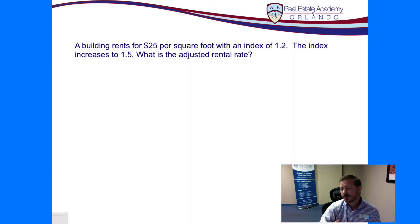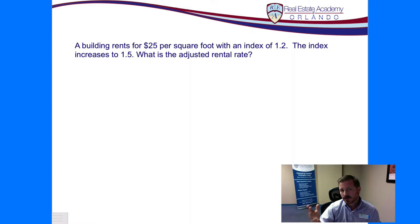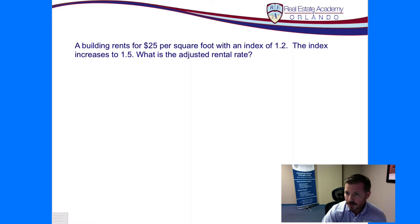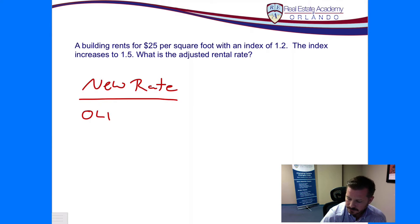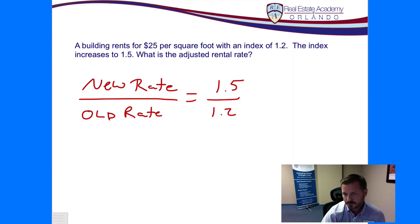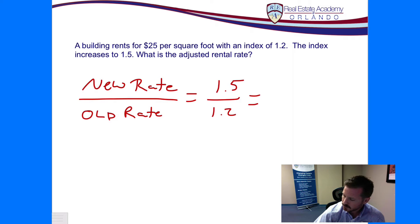We started with an index of 1.2 and we're ending at an index of 1.5 for this adjustment period. We're going to calculate this in a very simple way. We take our new rate and divide it by our old rate — our starting rate. So we have 1.5 divided by 1.2. When we put that into our calculator, 1.5 divided by 1.2, we end up with 1.25.